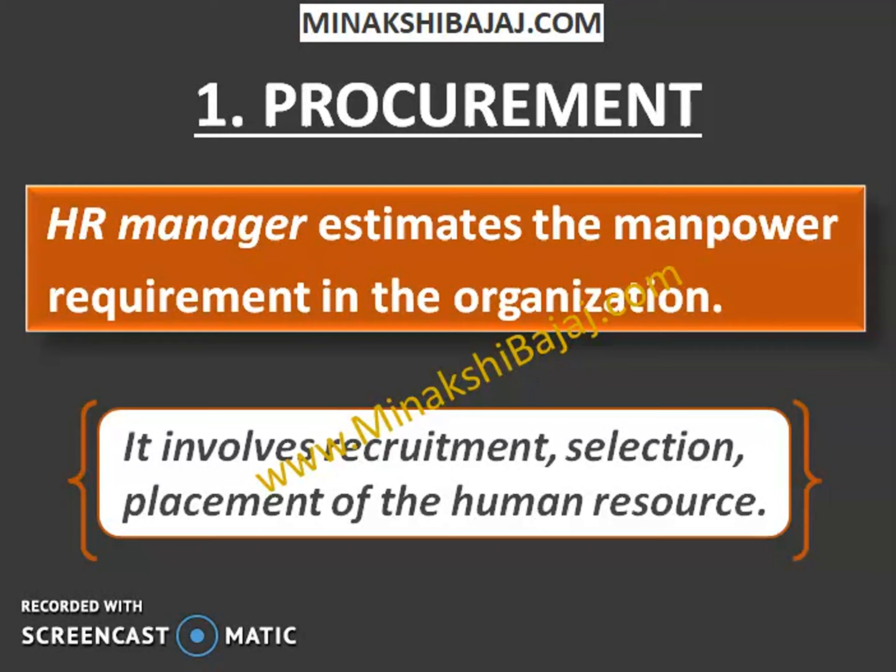Let's start with the Procurement Function. Procurement Function is about securing and employing the right kind of people. It is very important that the right number of people should be appointed in the organization — if the number doesn't match the requirements, there can be problems. When the HR manager performs the procurement function, he has to estimate manpower requirements, how many employees are required, and accordingly plan recruitment, selection, and final placement of human resources. To understand this, we will discuss an example.